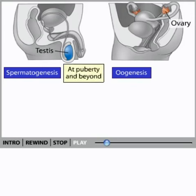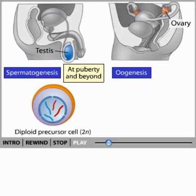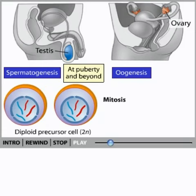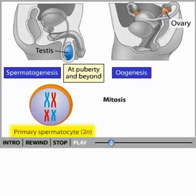At puberty and throughout the rest of the life of the male, diploid precursor cells proliferate by mitosis. Some of these cells become primary spermatocytes that are ready for meiosis.